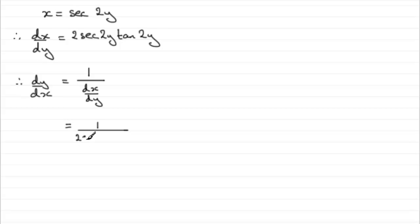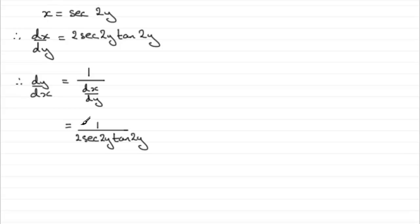So we'll just write that in first: 2sec(2y)tan(2y). But we're still in terms of y. Now this tan(2y) — we can develop this term here. Sec(2y) — that's good. We've got sec(2y) is x, so this part here is 1 over 2x. But it's the tan(2y) that is the problem at the moment.